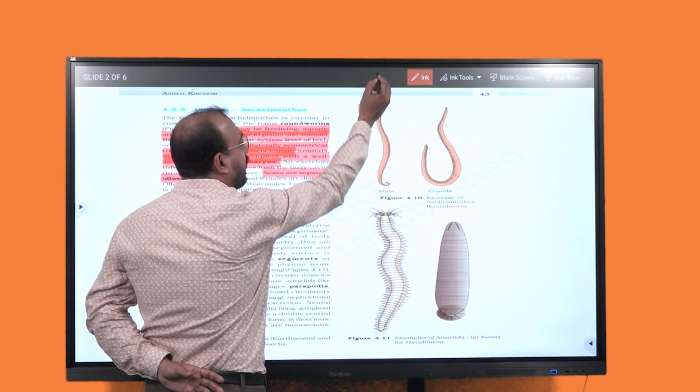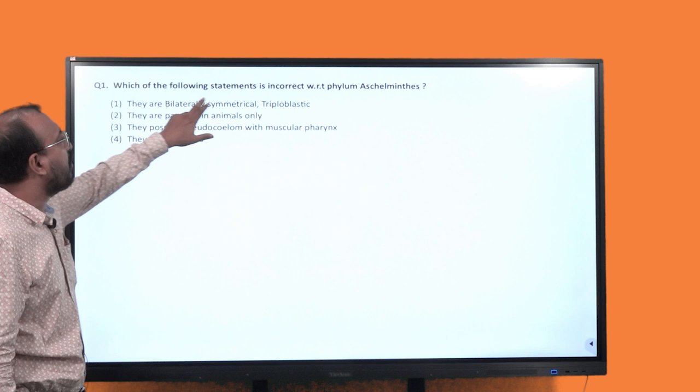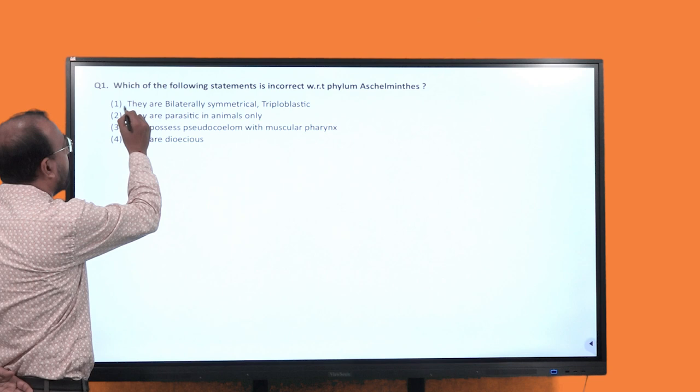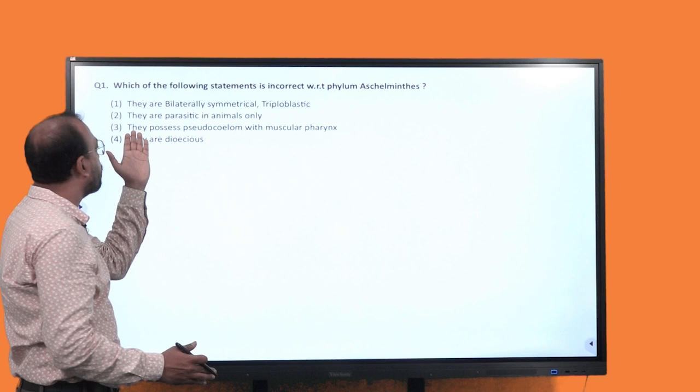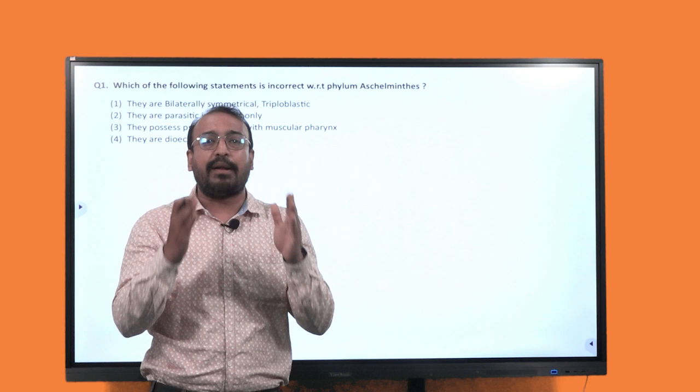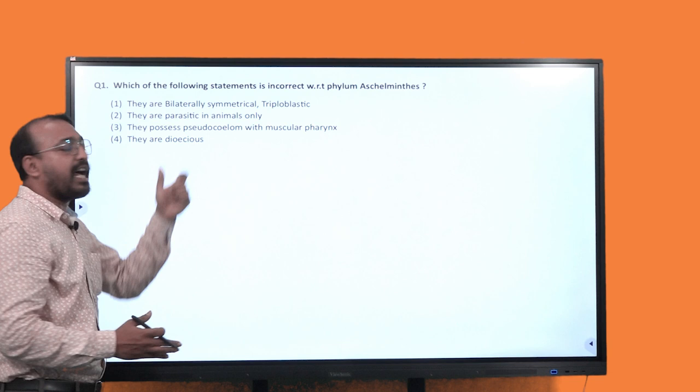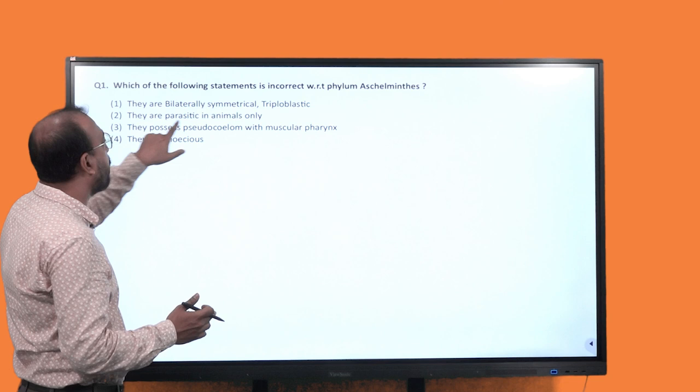They are separate and dioecious. So this information is there in the same way. So, the first one is they are bilateral symmetrical and triploblastic. Similarly, the third option they possess pseudocoelom with muscular pharynx. So pseudocoelom and muscular pharynx is the correct statement. The fourth one is they are dioecious.